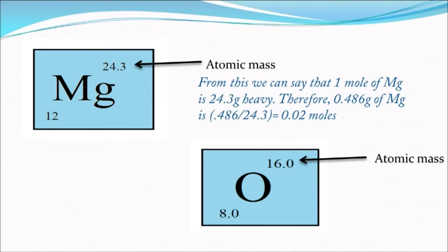Therefore, 0.486 grams of magnesium is 0.486 over 24.3, and that is 0.02 moles.